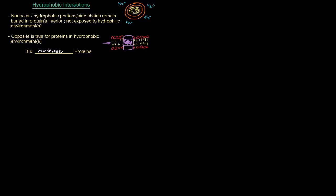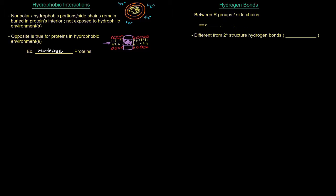The idea of like-dissolves-like is important for how a protein folds and the overall structure it takes on. Next up: hydrogen bonds. When it comes to hydrogen bonds and tertiary structure, we're talking specifically about hydrogen bonds between the R groups or side chains. Amino acids that hydrogen bond a lot include those with OH groups — serine, threonine, and tyrosine — though they're not the only ones. Asparagine and glutamine can also hydrogen bond with their amide groups, carbonyls, and nitrogens.